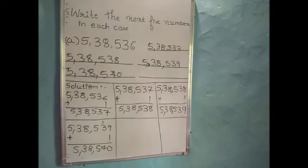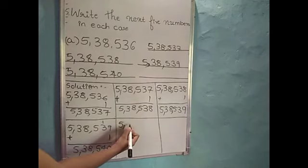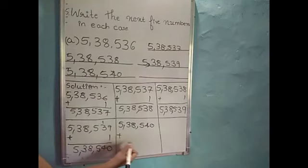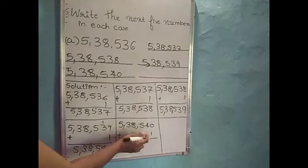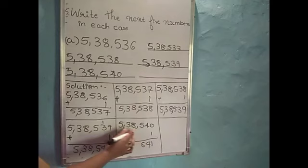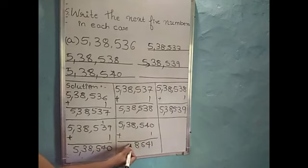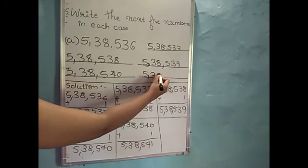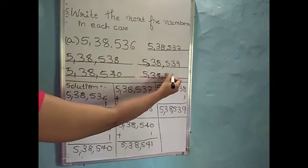We should add 1 to this number to get the next number. So 5,38,540 plus 1: 0 plus 1 is 1, and write remaining numbers as it is. So the next number is 5,38,541.